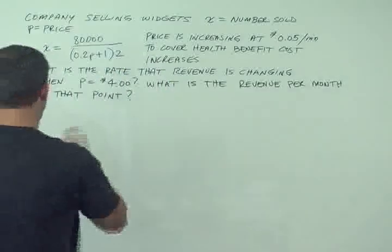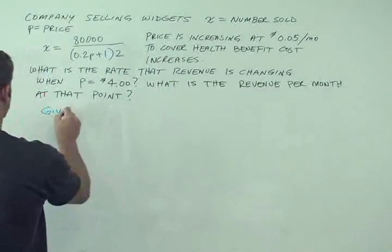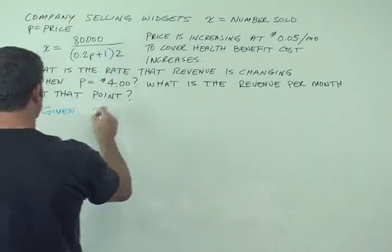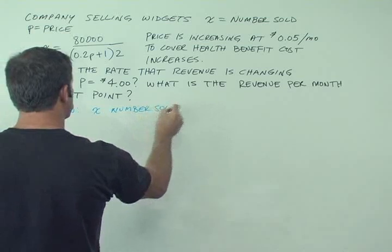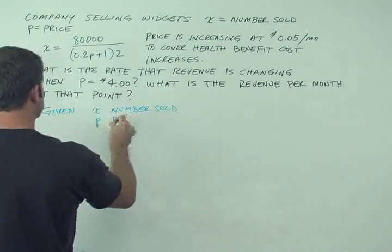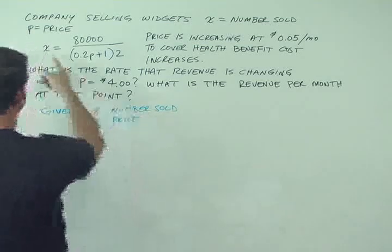So we're given definition, x equals number sold, p is price. We're given this formula, and we're asked to find...